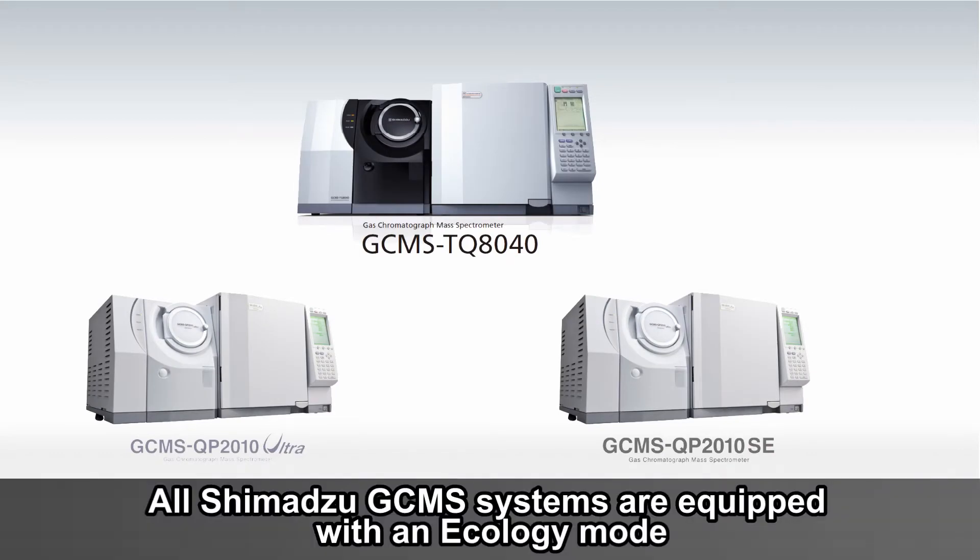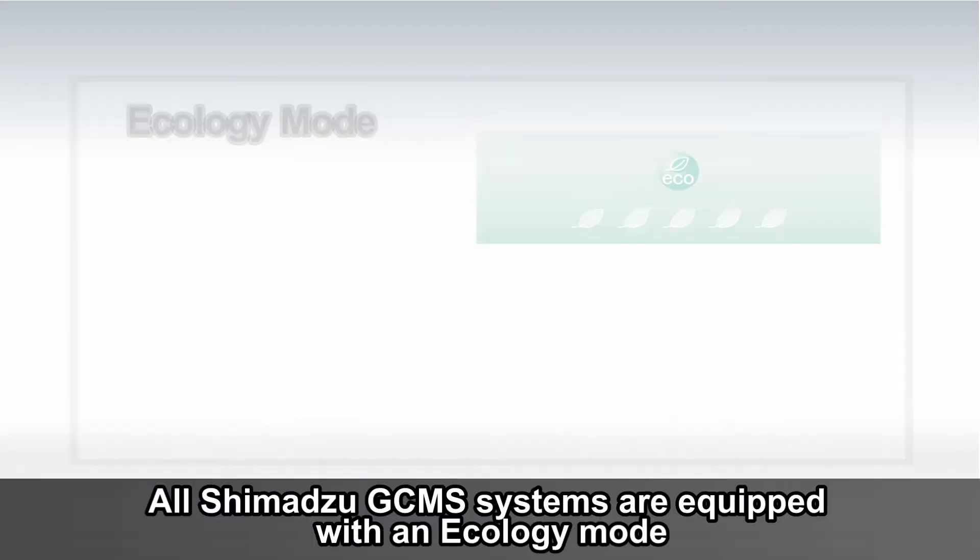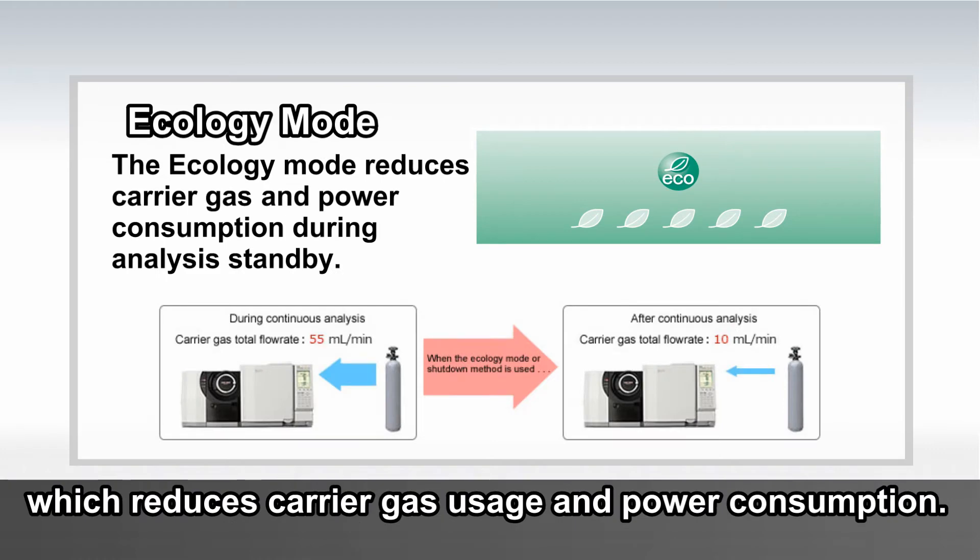All Shimadzu GC-MS systems are equipped with an Ecology Mode, which reduces carrier gas usage and power consumption.